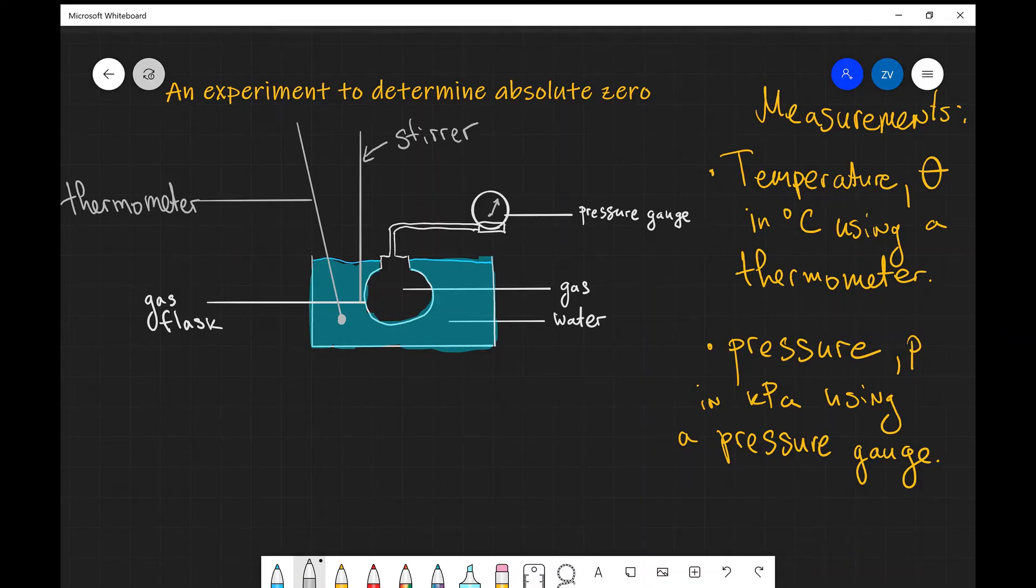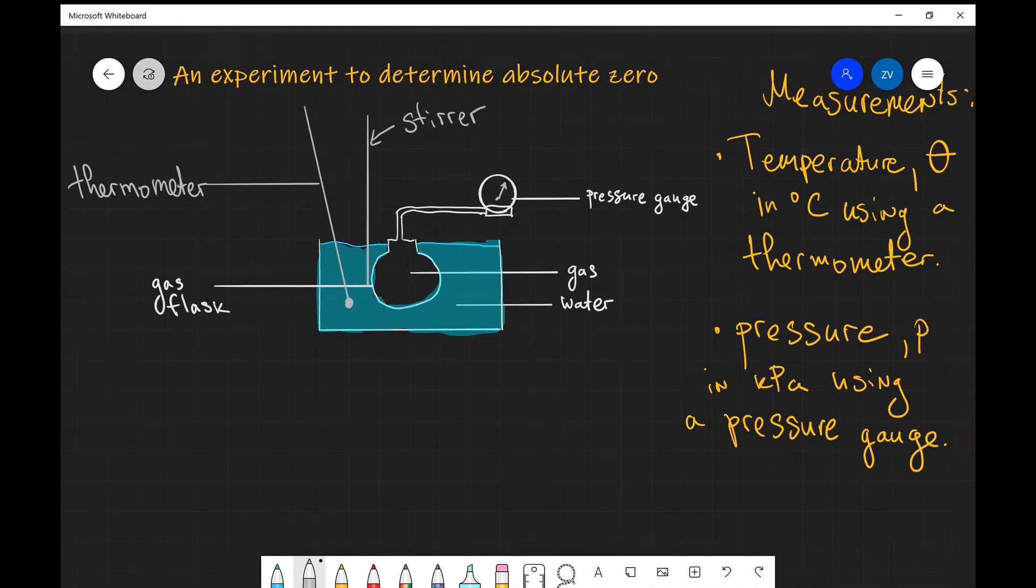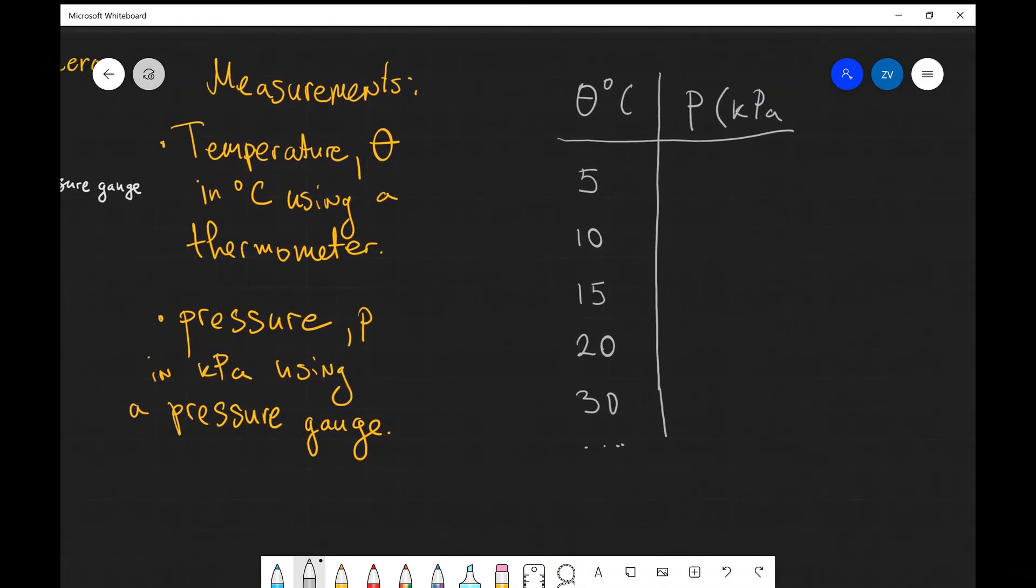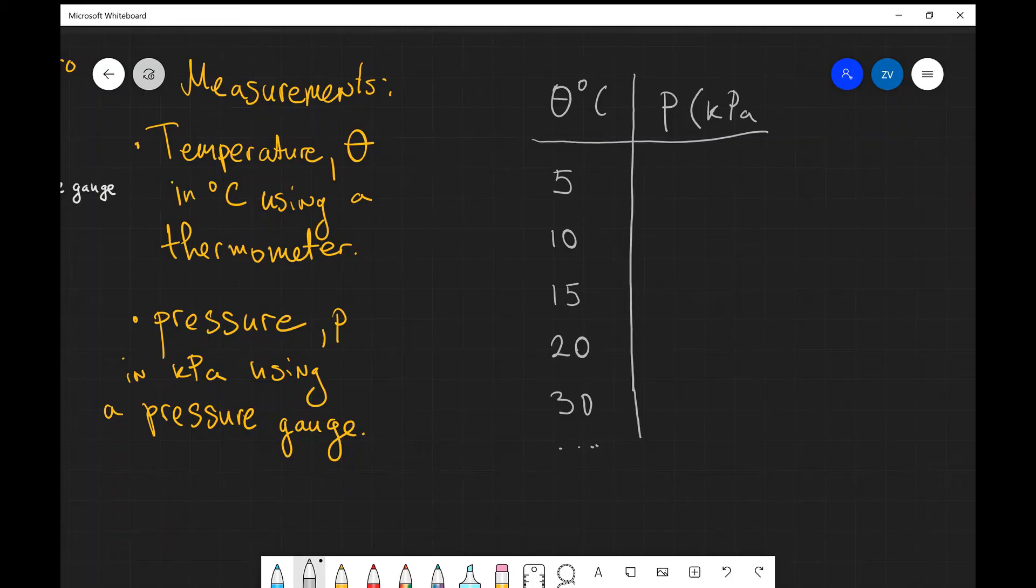In practice that means that our table of results is going to look similar to this depending on our starting temperature of course. For example if you're starting with just ice at zero degrees Celsius then your initial value is going to be zero degrees, but let's say that when we started this experiment our first value was five degrees. We're going to be taking measurements of the pressure for every five degrees, so we're going to take a measurement at 10, 15, 20, 30, etc.